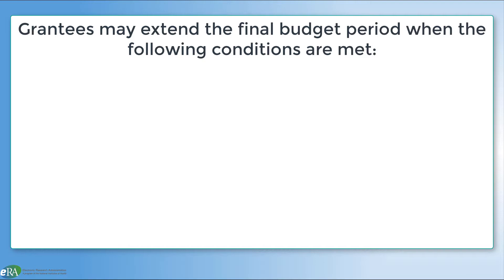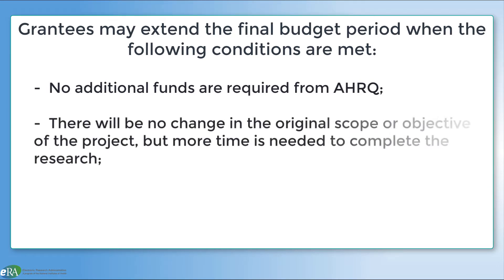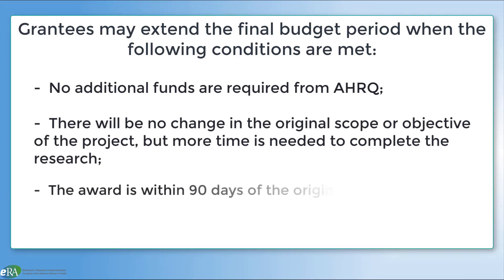Grantees may extend the final budget period of the project when the following conditions are met: no additional funds are required from AHRQ; there will be no change in the originally proposed scope or objective of the project, but more time is needed to complete the research; and the award is within 90 days of the originally approved project period end date.